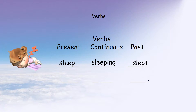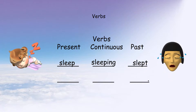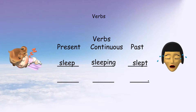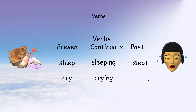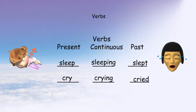Slept. What's the verb? Present tense: cry. Continuous tense: crying. Past tense: cried.